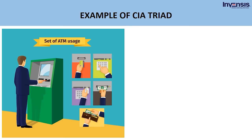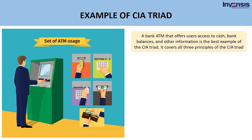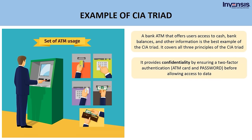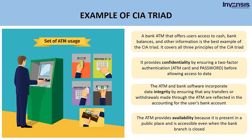Let us now look into a real-time example explaining the CIA triad. A bank ATM that offers users access to cash, bank balances, and other information is the best example. It provides confidentiality by ensuring two-factor authentication — ATM card and password — before allowing access to data. The ATM and bank software incorporate data integrity by ensuring that any transfers or withdrawals are reflected in the accounting for the user's bank account. The ATM provides availability because it is present in a public place and is accessible even when the bank branch is closed.